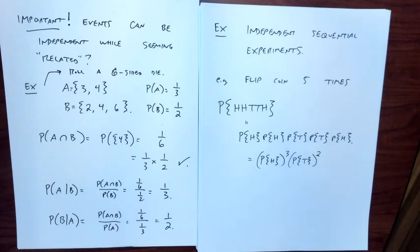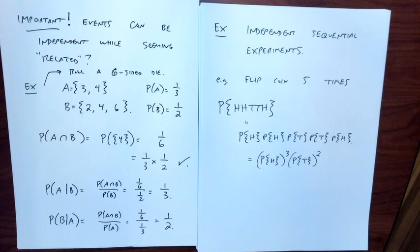There's only one die roll here. Event B is that the roll was even; the other event is that I got a three or four. I rolled the die once and I'm looking at these two events.